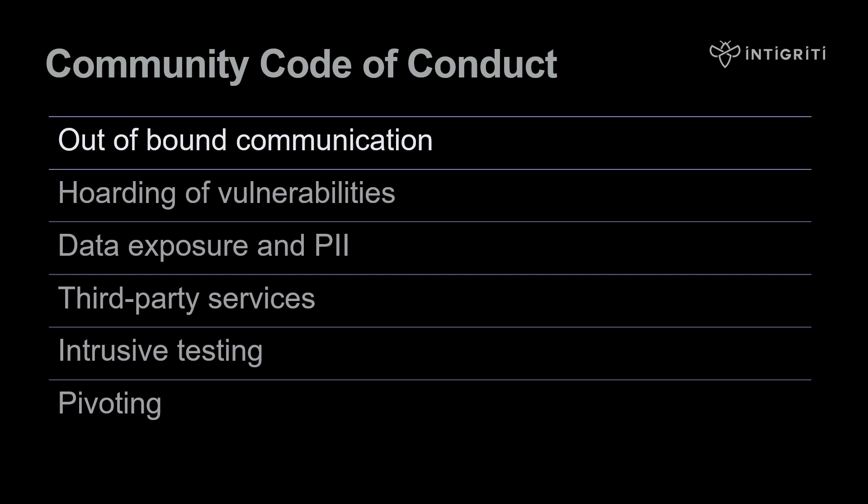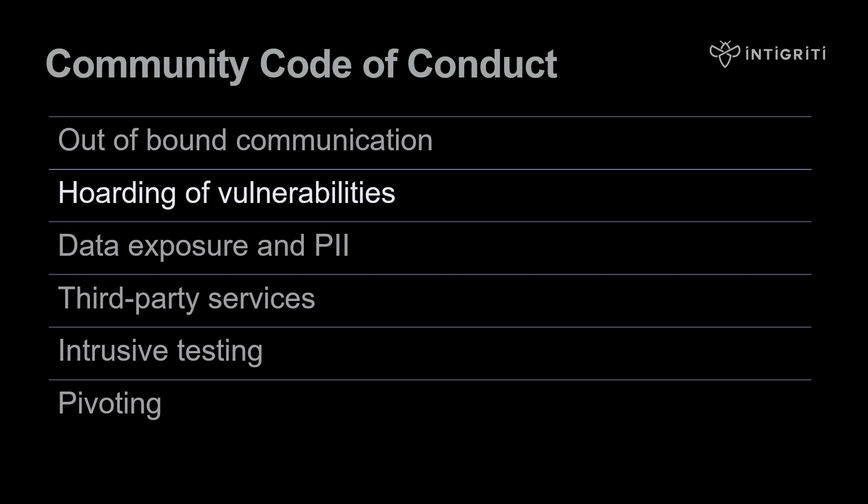Out-of-bounds communications: all reports must be sent through the Integrity platform, and reaching out to customers directly is prohibited. Researchers should not privately hold vulnerabilities for extended periods of time without reporting. Integrity expects timely reporting — within 48 hours of finding the vulnerability — unless it's part of a chain of vulnerabilities you're trying to exploit.